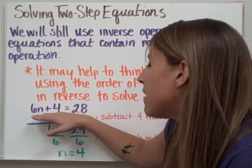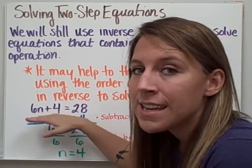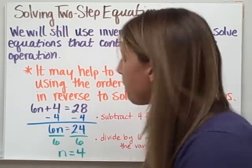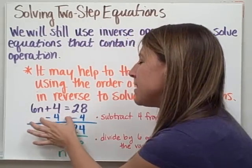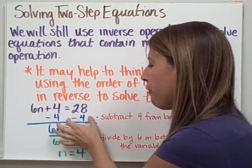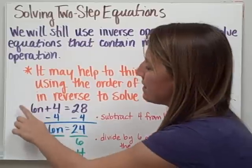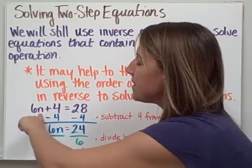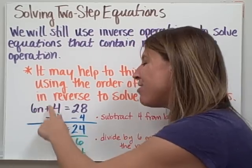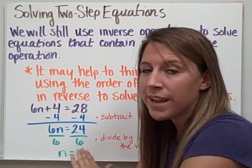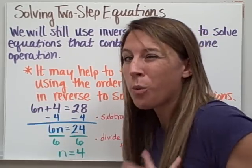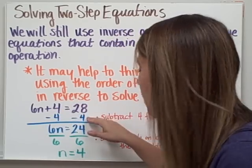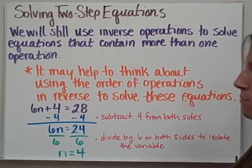In this equation, I begin with 6n plus 4 equals 28. In the order of operations, addition and subtraction are our last step. Here, we are going to subtract 4 from both sides first, because in this operation, on the side with the variable, 6n is being multiplied by 6, and then 4 is being added to it. So that's going to be the first thing we take away. We're going in reverse. So I take away 4 from both sides first. Subtract 4 from both sides.